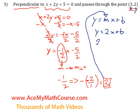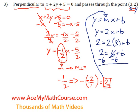So y is 2. x is 3. 2 is equal to 2 times 3, which is 6, plus b. We can subtract 6 from both sides of the equation. 2 minus 6 is negative 4. So that is the y-intercept.